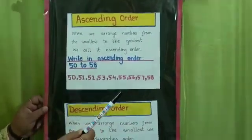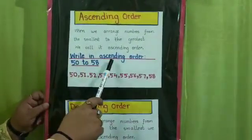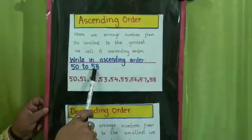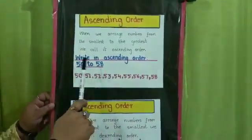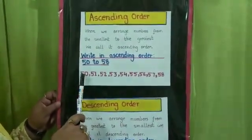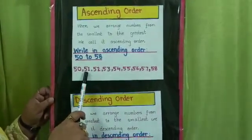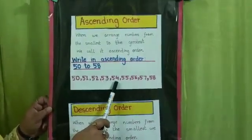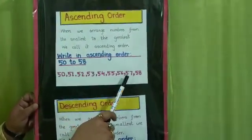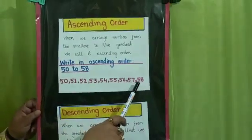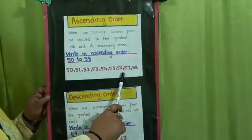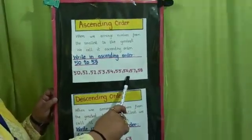Example: write in ascending order 50 to 58. We write it as 50, 51, 52, 53, 54, 55, 56, 57, 58. This is ascending order.